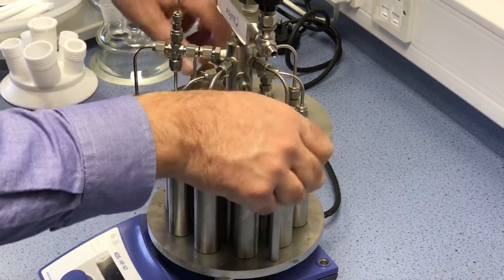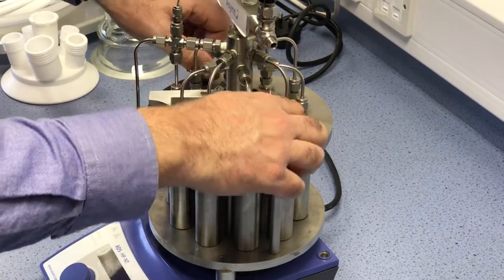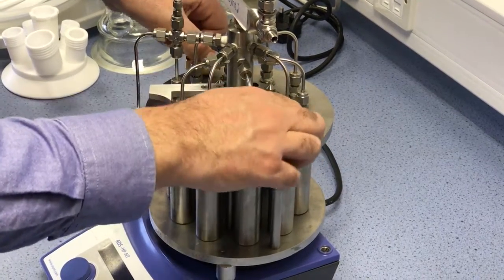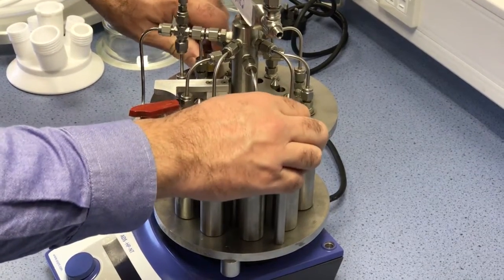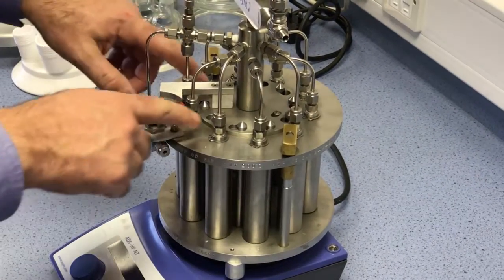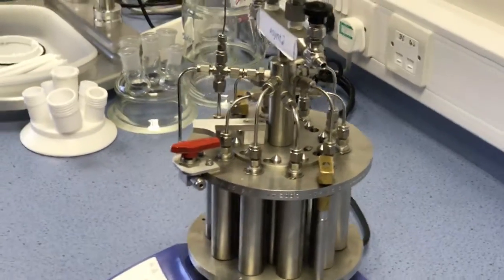Once we've done that then we turn these anti-clockwise and lift up the unit until we can feel a little bit of tightness and then we've got it locked on the plate and it's now safe to use at 50 bar.